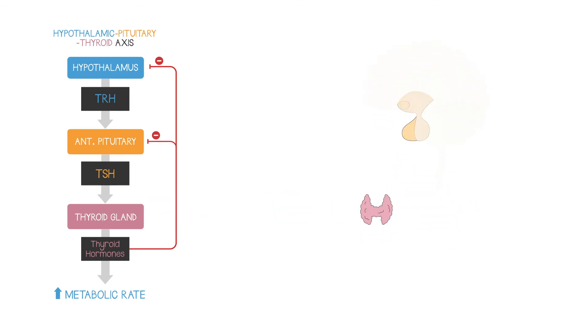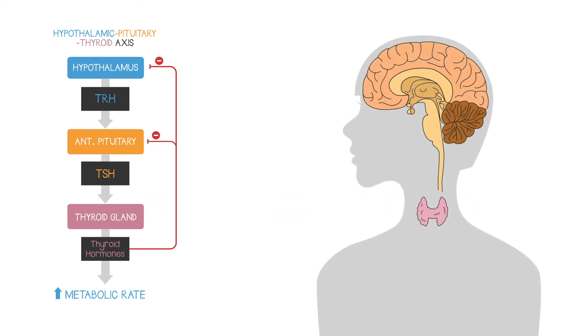If the normal negative feedback mechanisms somehow go wrong, this can lead to clinical problems. For example, thyroid hormone contains iodine as part of its structure. If you're deficient in iodine because you're not eating enough as part of your diet, you can't make enough thyroid hormone, and this represents one form of hypothyroidism.